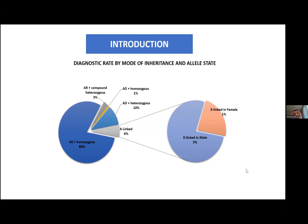We then go down to autosomal dominant and then X-linked. We know the majority of lysosomal storage diseases, if not all — except maybe a few X-linked ones — are autosomal recessive. So basically, we'll be looking for an autosomal homozygous variant in one of these autosomal recessive genes.